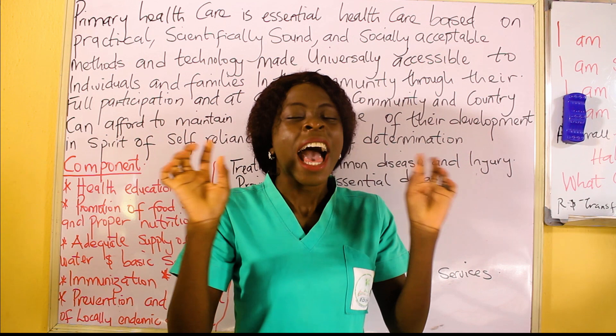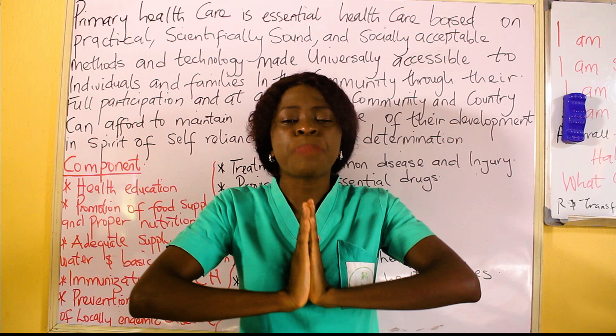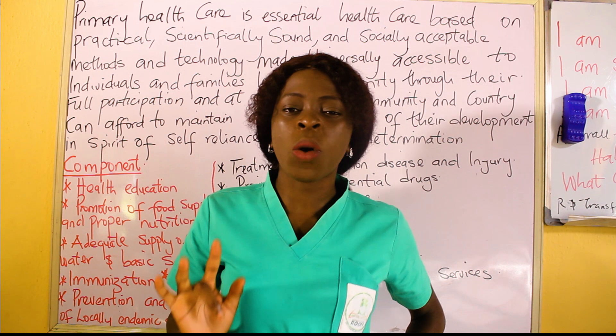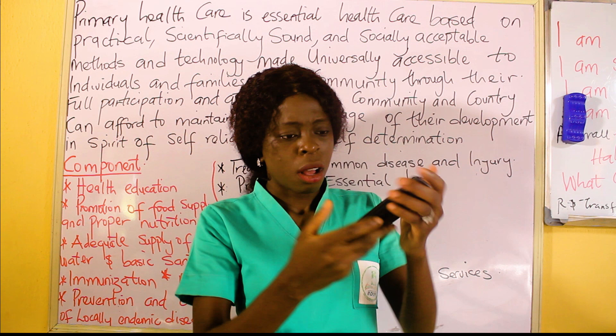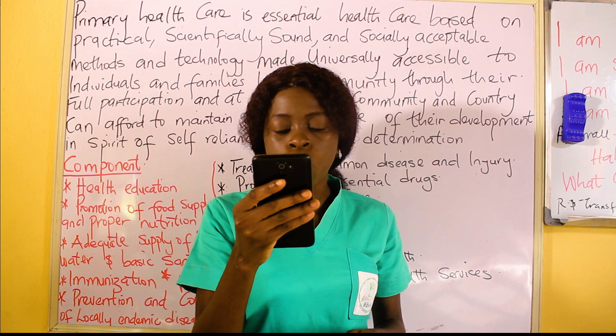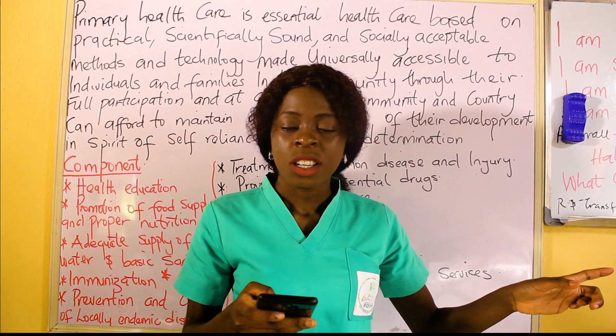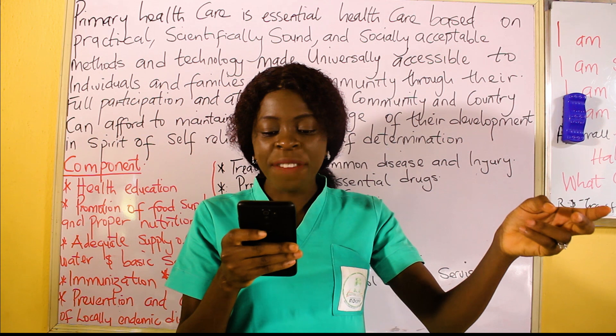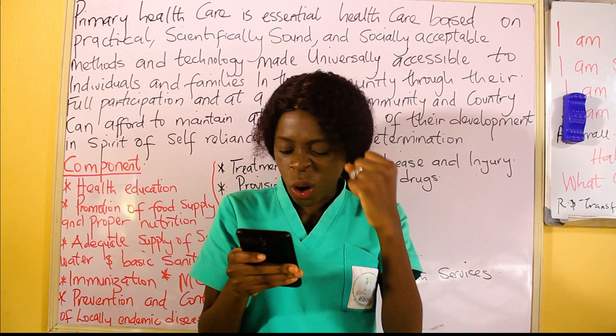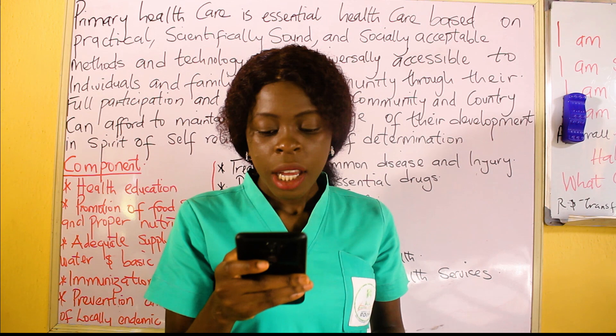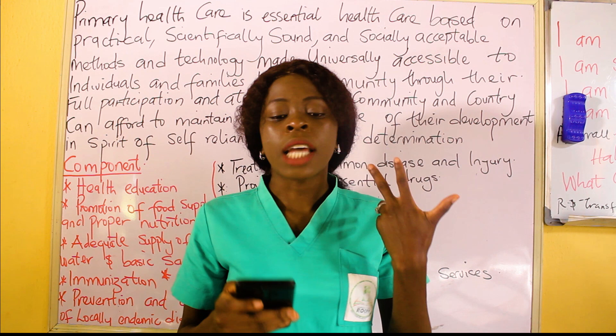The marks attached: for principles, it is half a mark for each correctly stated principle, and you are expected to list six principles. For objectives, it is one mark for each, so five objectives give five marks. For components, it is half a mark each, so listing ten components gives five marks. The definition is worth two marks total — it is one definition, not marks each. Thank you very much for staying tuned and watching.